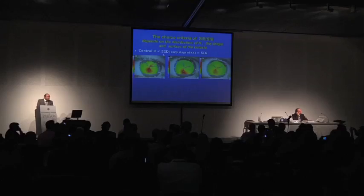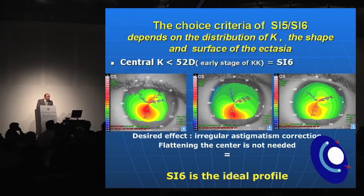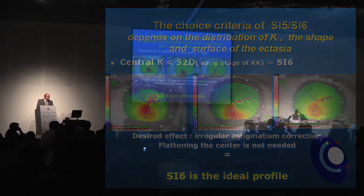In practice, our choice criteria for SI5 and SI6 depend on the distribution of keratometry, and the shape and surface of ectasia. In an early stage of keratoconus where central keratometry is less than 52 diopters, we don't need central flattening — the desired effect is to treat irregular astigmatism. So the ideal profile in these cases will be SI6.